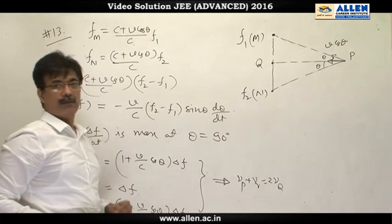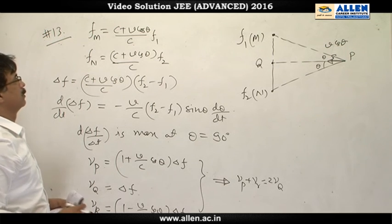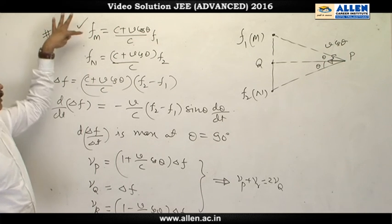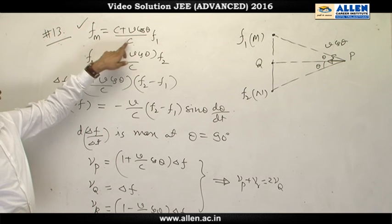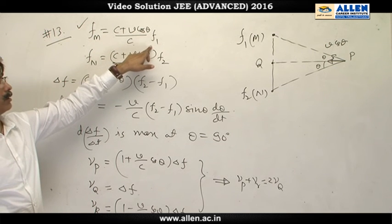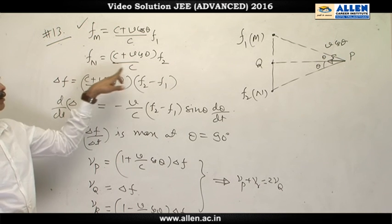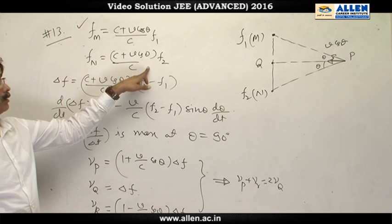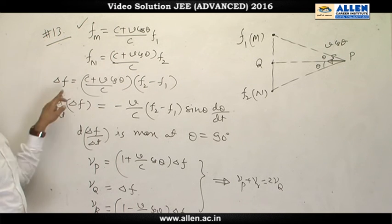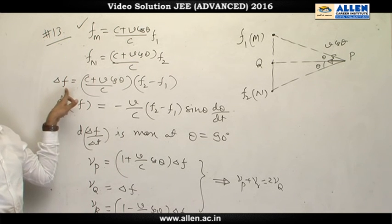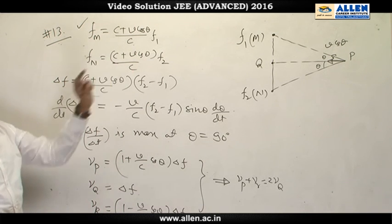From the formulas of Doppler effect, frequency received from m is c plus v cos theta upon c times f1. Similarly, frequency received from n is this value. Difference of these two frequencies is beat frequency received by person in car.